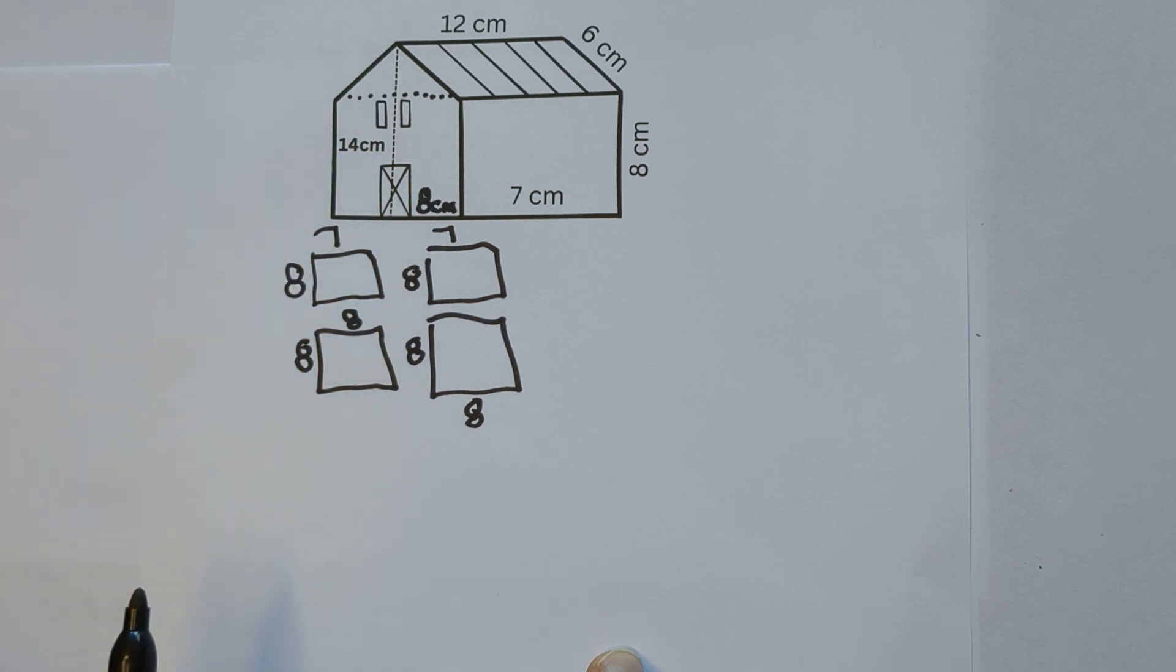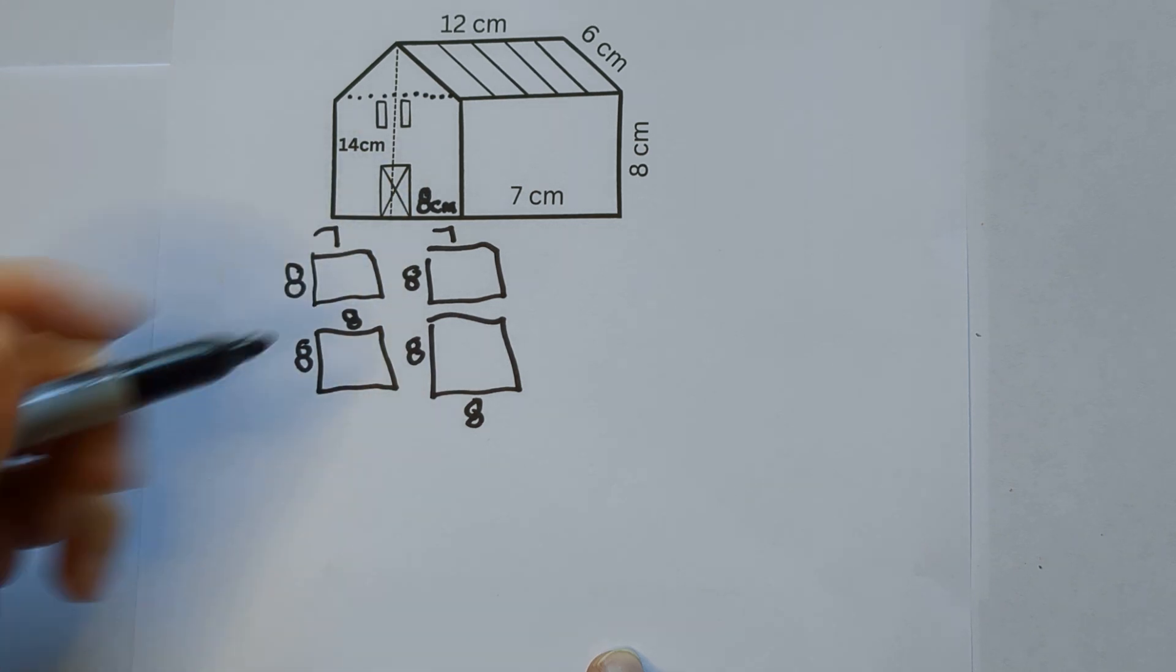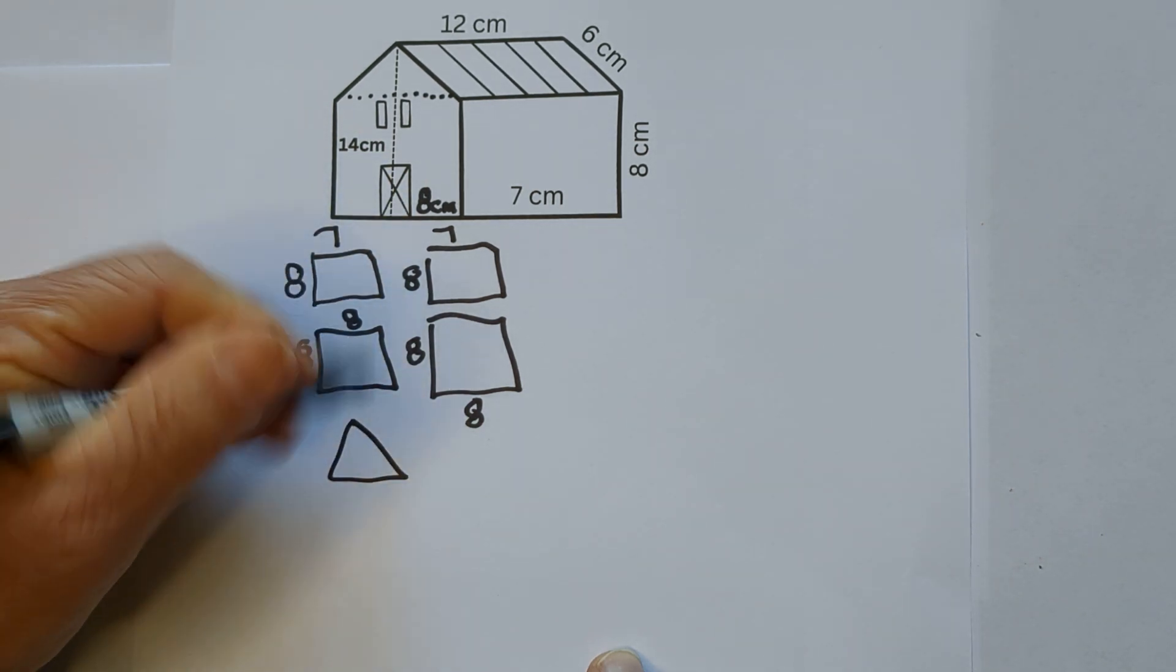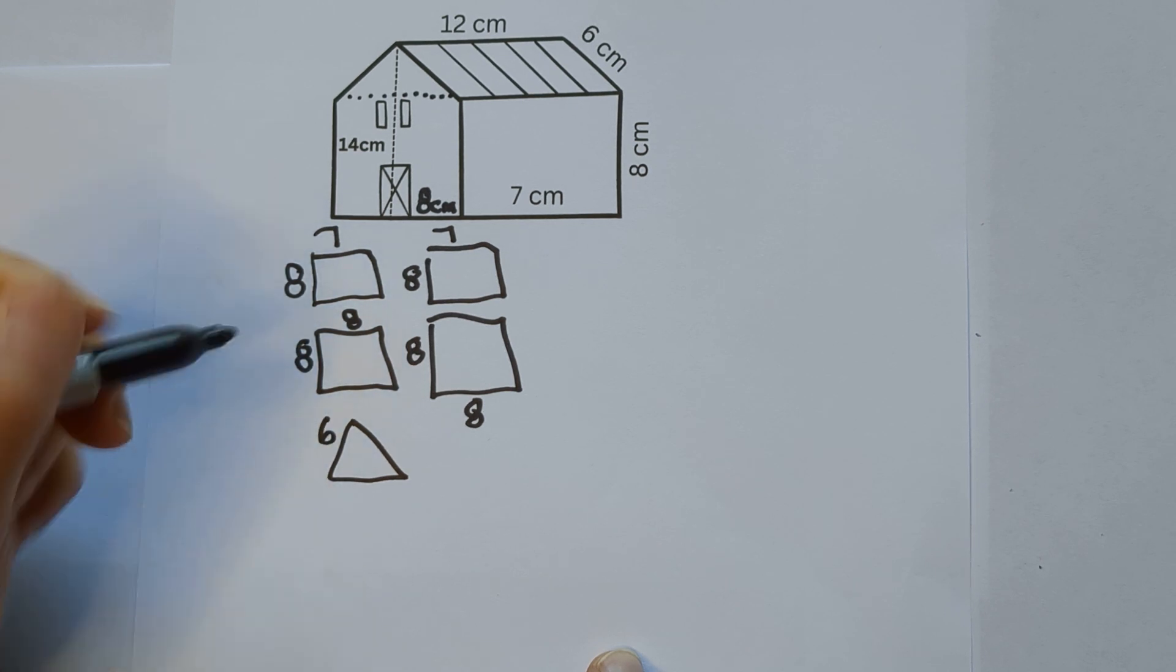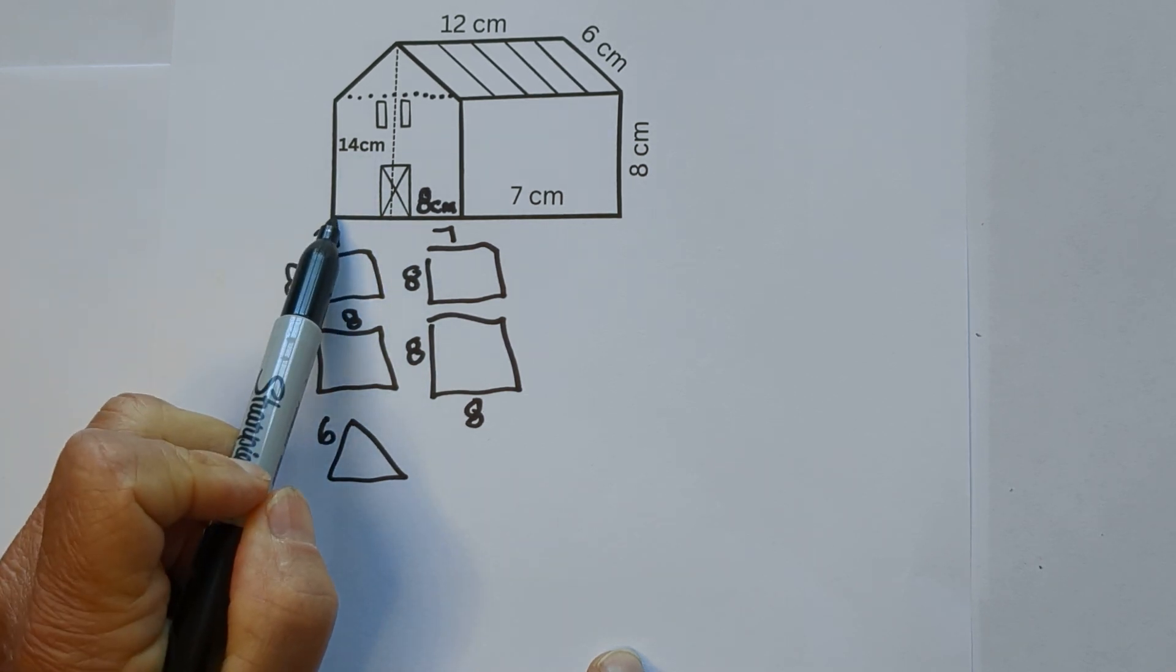So if we take 14 minus 8, that's going to give us 6, so the height of the triangle is 6. And then the base is 8.